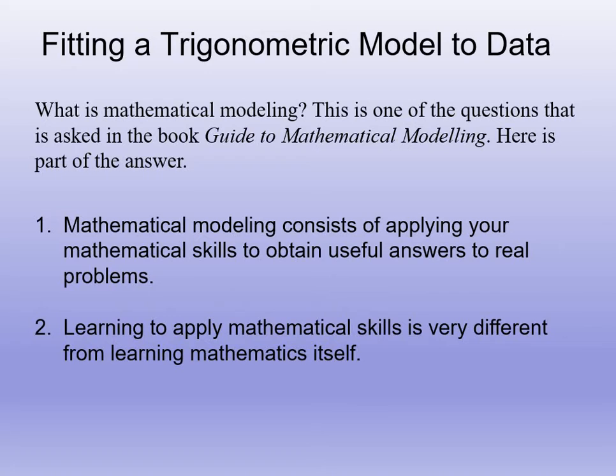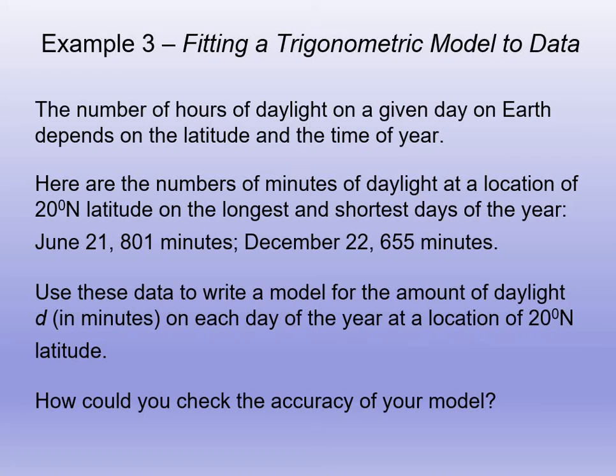Lastly, we did this in Math 1720, fitting a trigonometric model to the data. The number of hours of daylight on a given day on Earth depends on the latitude and the time of the year. The northern hemisphere is farthest from the sun in December, and closest to the sun in June. On June 21st at 20 degrees north latitude, there's about 801 minutes of sunlight. And on December 22nd, our shortest day of the year, there's 655 minutes of sunlight.